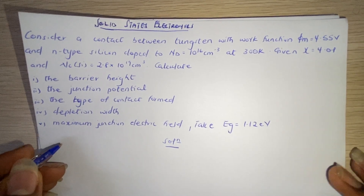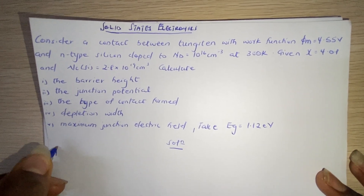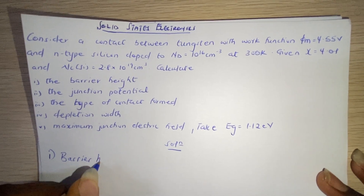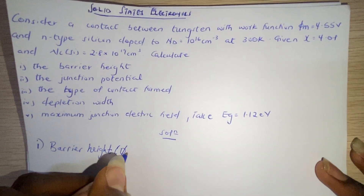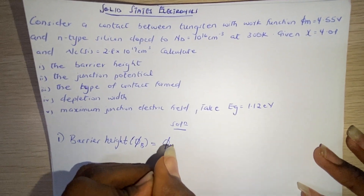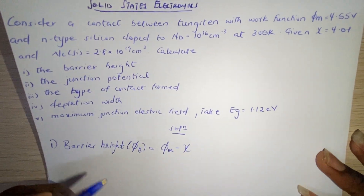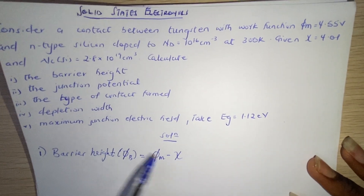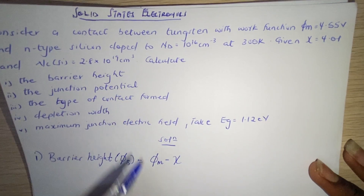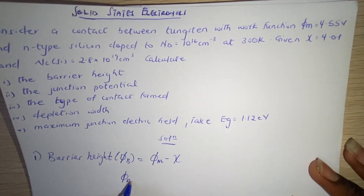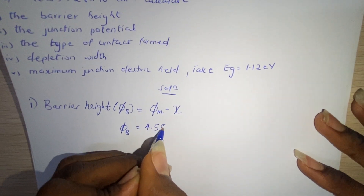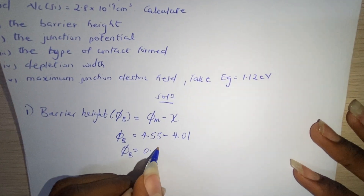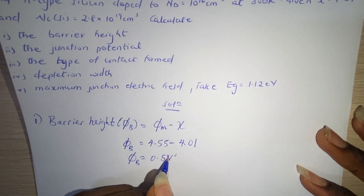So let's go to the solution. Starting with part i, we are supposed to find the barrier height. The barrier height, which is φB, is equal to φm minus χ. φm is the work function of the metal, which is 4.55, and χ is the electron affinity of silicon, which is 4.01. So we have φB equal to 4.55 minus 4.01, and that gives us 0.54 volts.